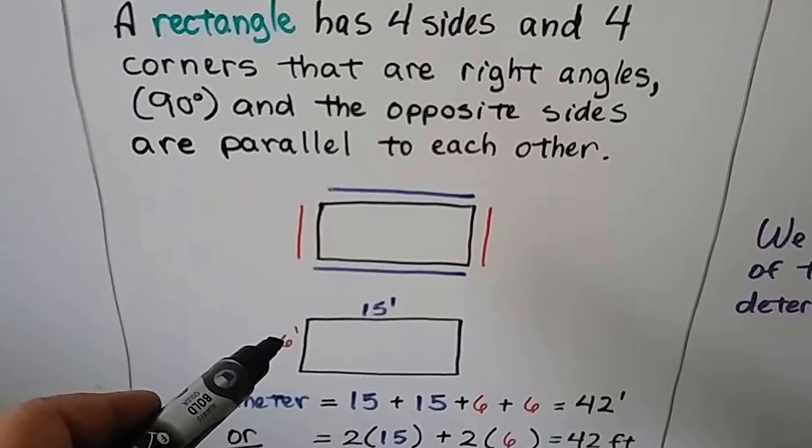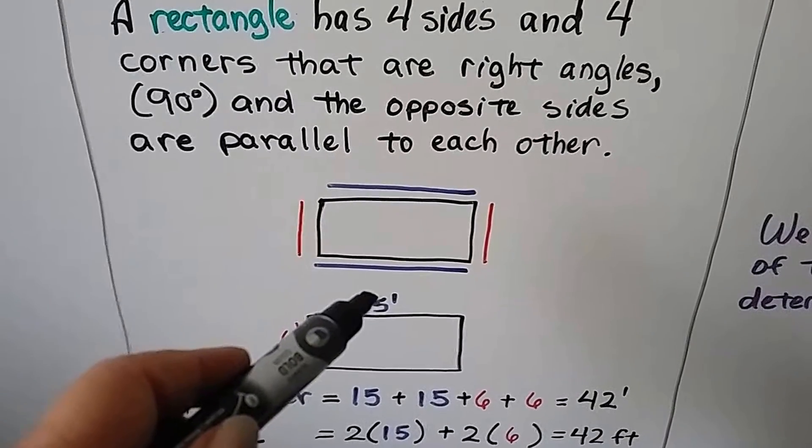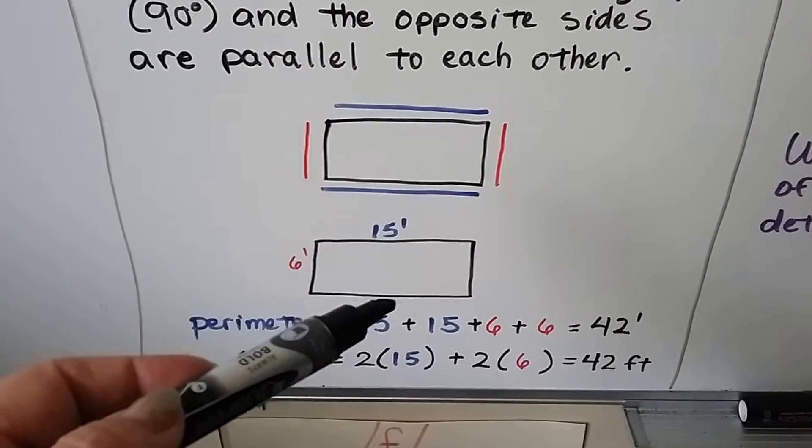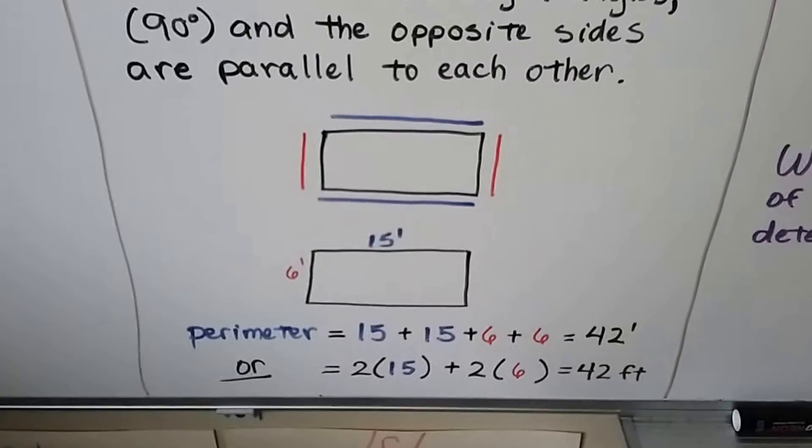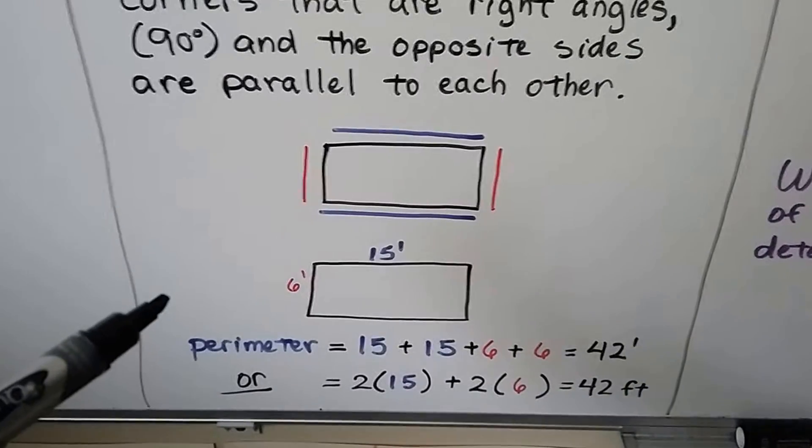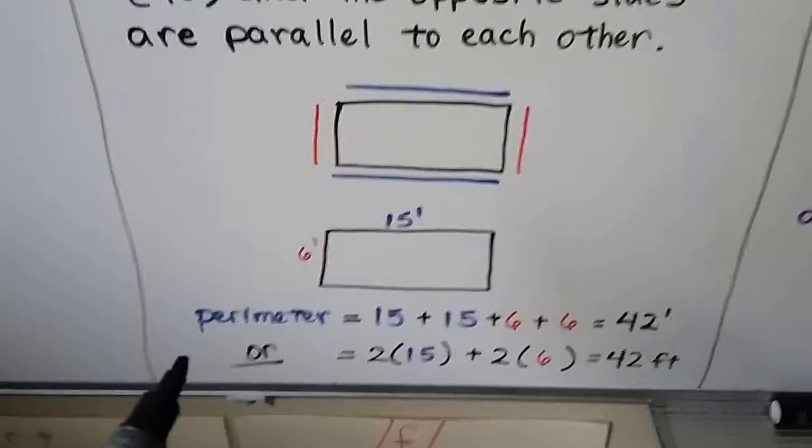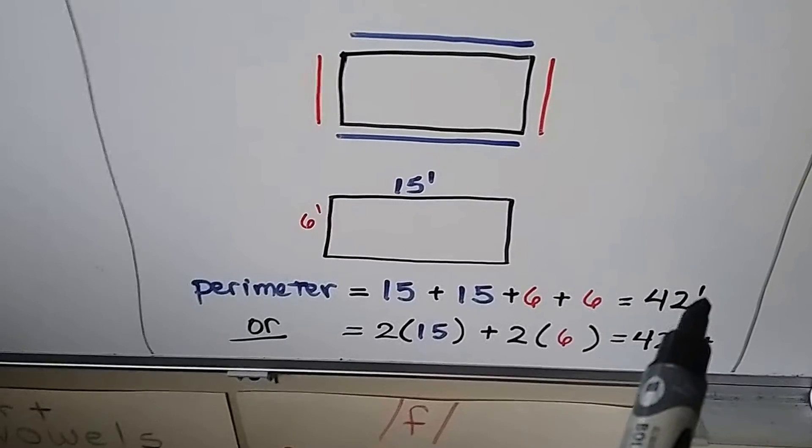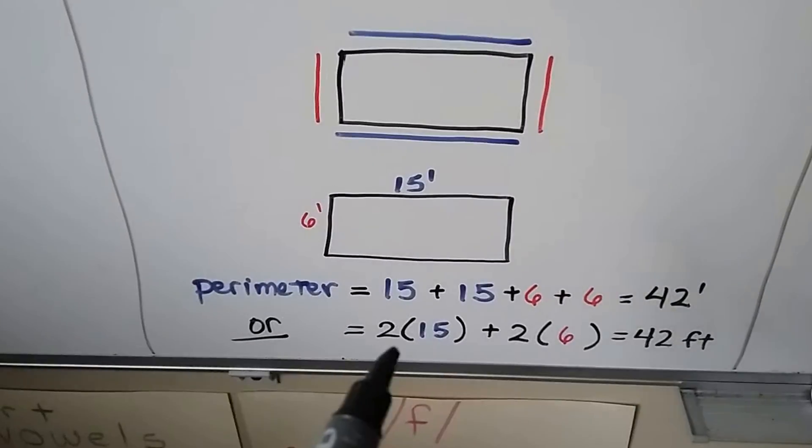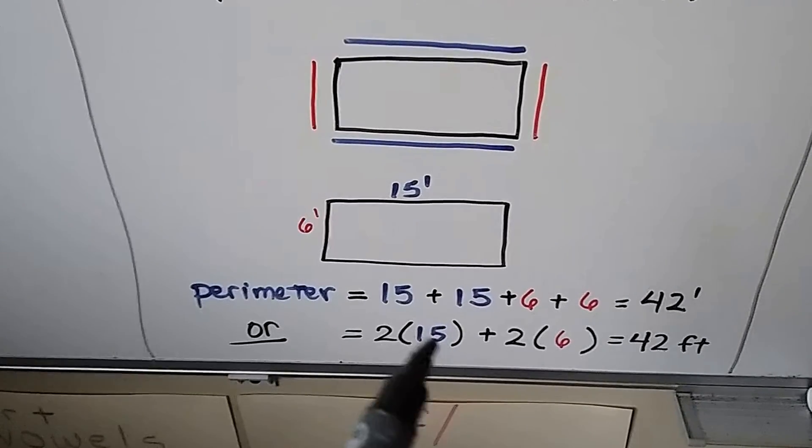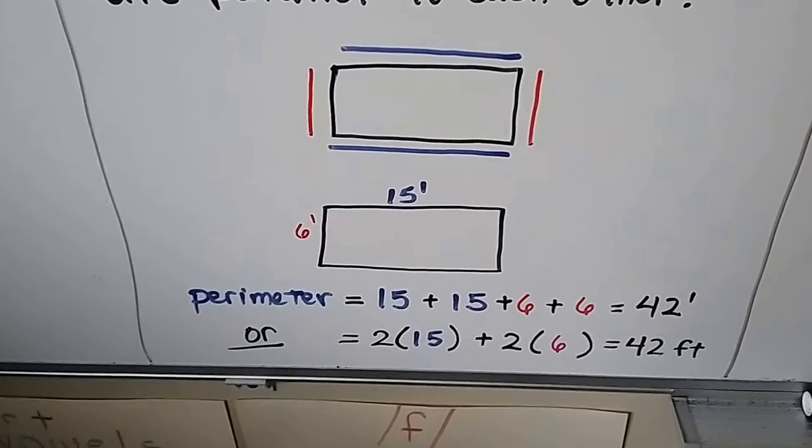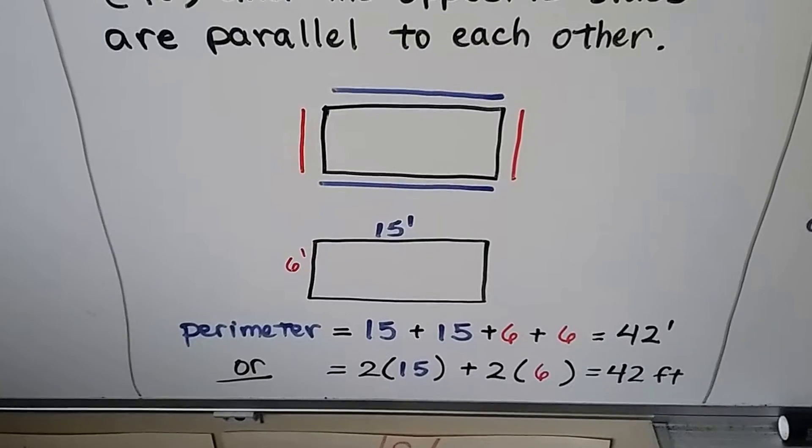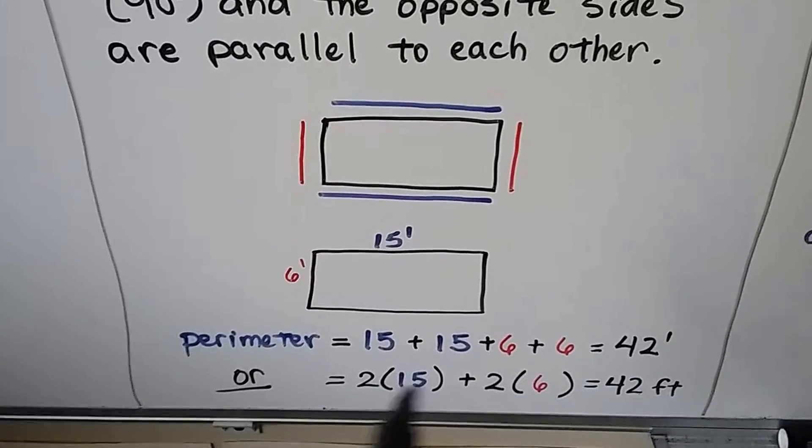So if we're given that this side is six feet and this side is 15 feet, we can find the perimeter of the whole thing. If that's 15 feet, then that's got to be 15 feet. And if that's six feet, that's got to be six feet because that's the definition of a rectangle. The perimeter would be 15 plus 15 plus 6 plus 6. That would be 42 feet. Or we could even use multiplication. We could say 2 times 15 plus 2 times 6. That would give us 30 plus 12, which would give us 42 feet. So you can either just add them up or you can use multiplication.